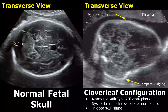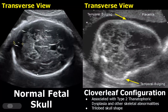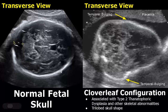The normal shape of the fetal head is ovoid, and the normal calvarium will be hyperechoic — we will see a bright skull. Over here we have a clover leaf configuration, which is usually associated with type 2 thanatophoric dysplasia, but it is also associated with other skeletal abnormalities.